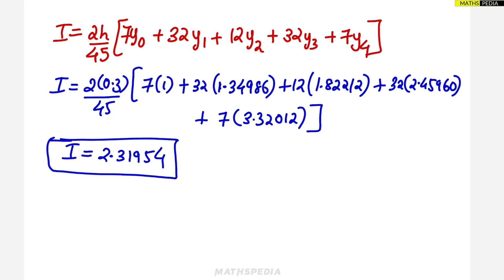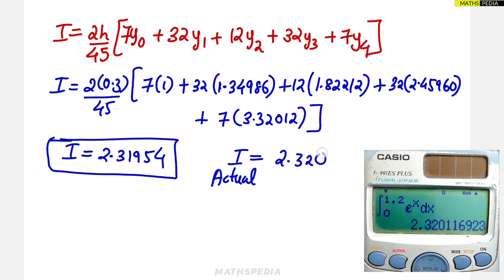The I value we have got. What is the actual value? The actual value using the calculator you can find out, which is equal to 2.320. This is the actual value. We can see that it is approximately equal, but the thing is that slight deviation or slight error will be there.